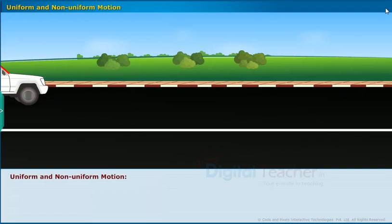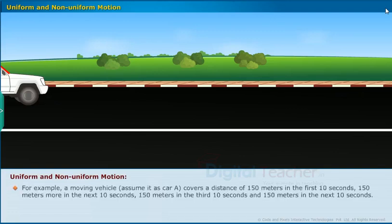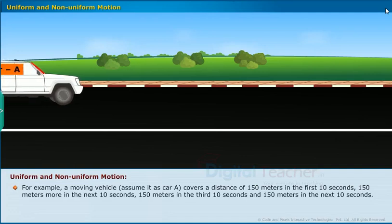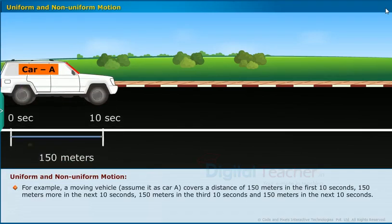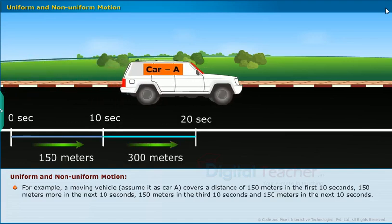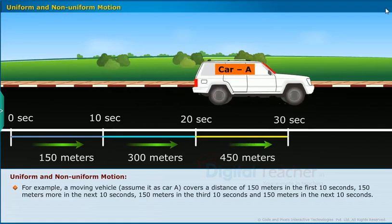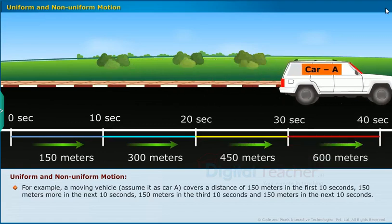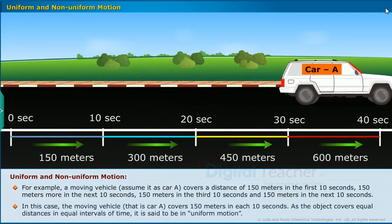Let us know about uniform and non-uniform motion. For example, a moving vehicle, assume it as car A, covers a distance of 150 meters in the first 10 seconds, 150 meters more in the next 10 seconds, 150 meters in the third 10 seconds, and 150 meters in the next 10 seconds. In this case, the moving vehicle, car A, covers 150 meters in each 10 seconds. As the object covers equal distances in equal intervals of time, it is said to be in uniform motion.